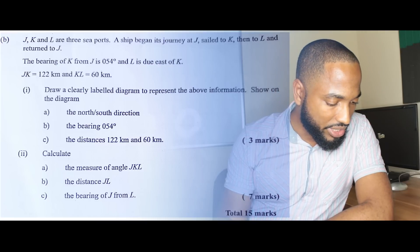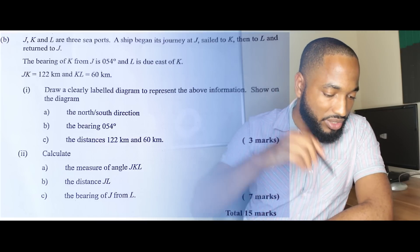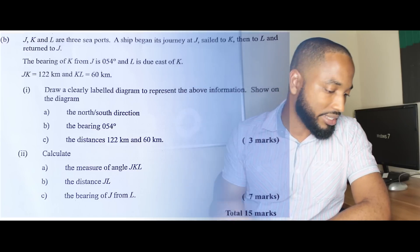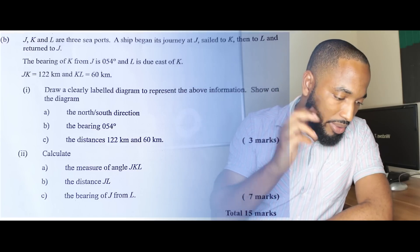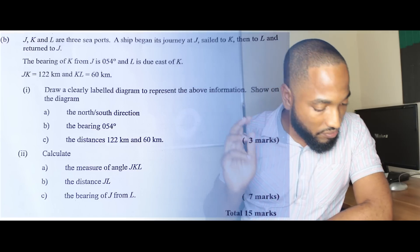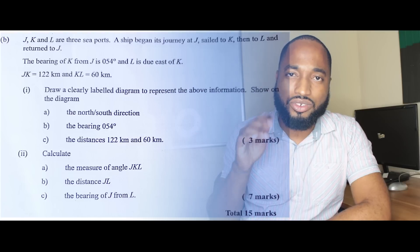All right, JK and L are three sea ports. A ship starts at J, went to K, went to L, and came back to K. The bearing of K from J is 54 degrees, and L is due east of K.